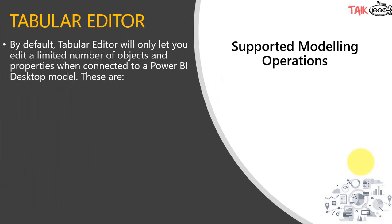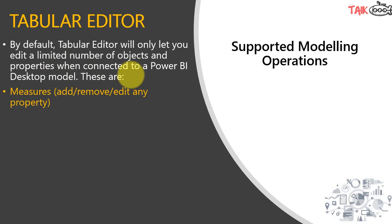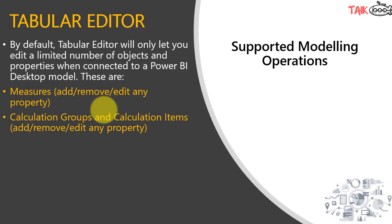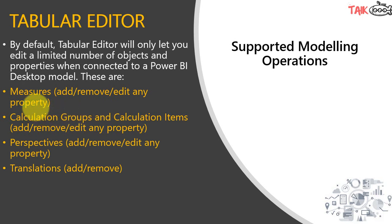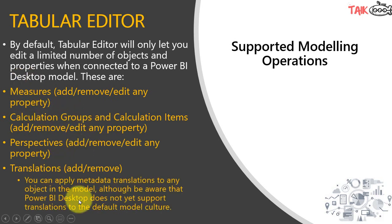Now let's look at the supported modeling operations in Tabular Editor when connected to Power BI Desktop. By default, Tabular Editor will only let you edit a limited number of objects and properties. These include measures — where you can add, remove, and edit any property — calculation groups and calculation items where you can add, remove, and edit any property, and perspectives where you can remove and edit any property. For translations, you can add and remove them, applying metadata translations to any object in the model.